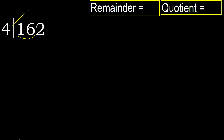But not greater. 4 multiplied by 5 is 20 — 20 is greater. Multiply by 4: 16 is not greater. Subtract: 16 minus 16 equals 0. Next.